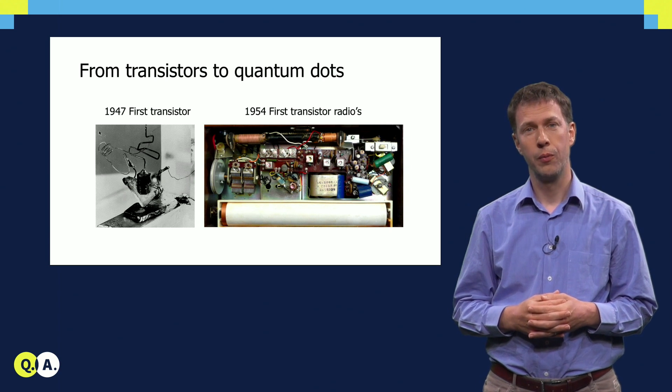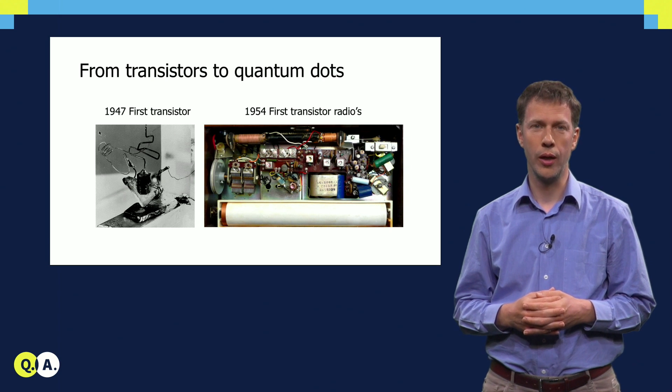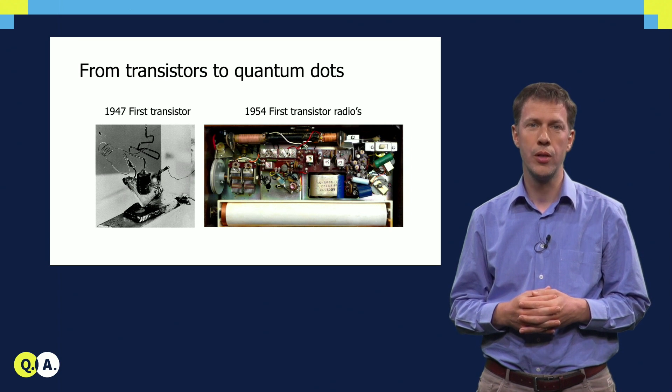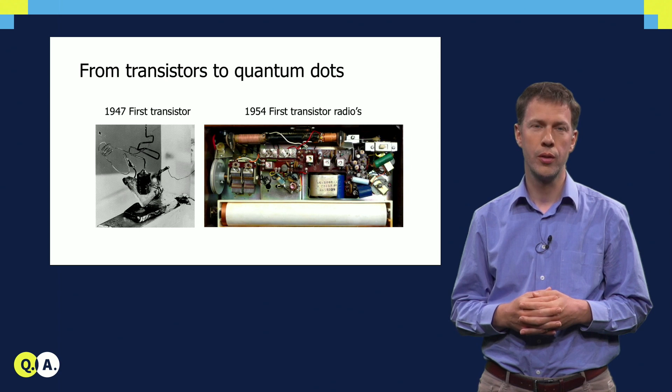Shortly after that, people began to put several transistors together on a circuit with capacitors and resistors, and developed the first transistor radio.